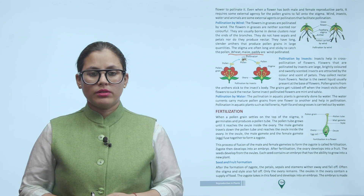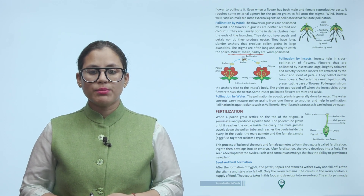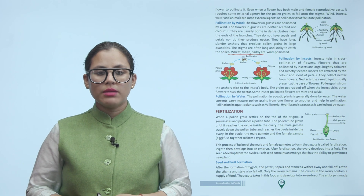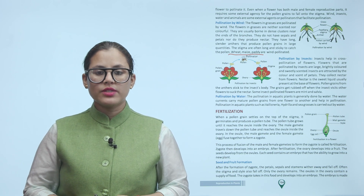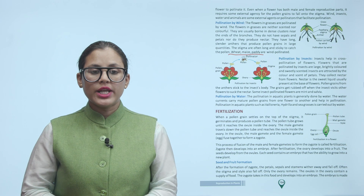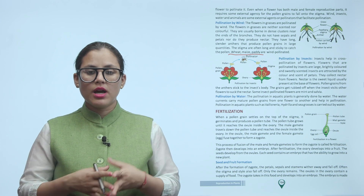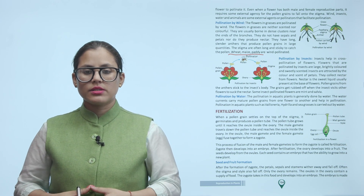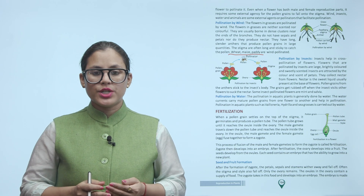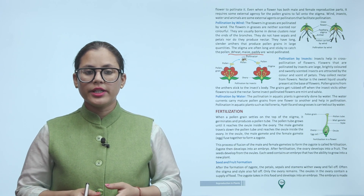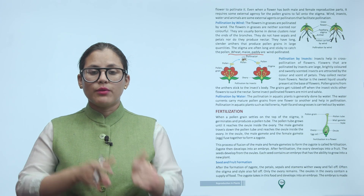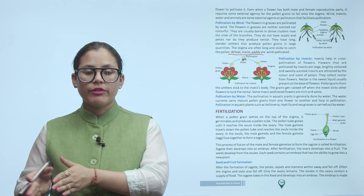Pollination by water: The pollination in aquatic plants is generally done by water. Water currents carry mature pollen grains from one flower to another and help in pollination. Aquatic plants such as Vallisneria, Hydrilla, and sea grasses are pollinated by water.